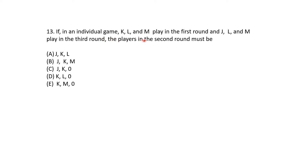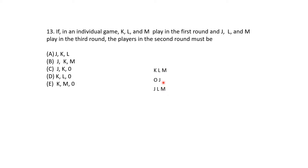Next question: if in an individual game, KLM plays in the first round and JLM plays in the third round, the players in the second round must be determined. KLM plays in the first round means J, R, O sit out. M is in both the first and second round. L is in both the first and third round. K must be in the second round.